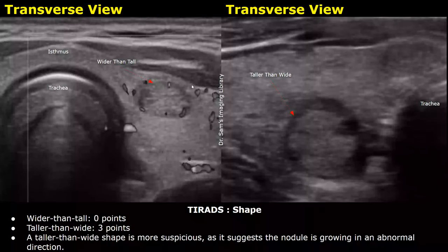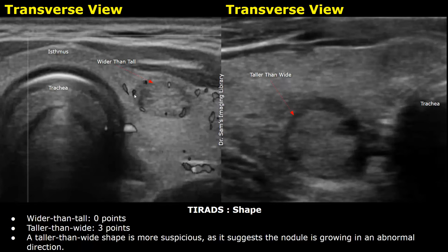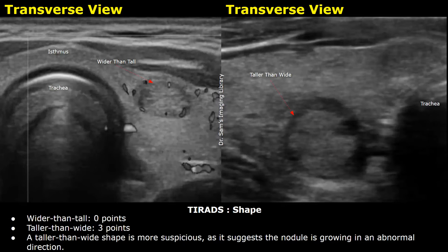The next feature is shape of the nodule. The first shape is wider than tall. In an ultrasound image, nodules where the width is greater than the height or AP measurement are considered wider than tall. This shape is mostly associated with benign nodules and is given zero points.